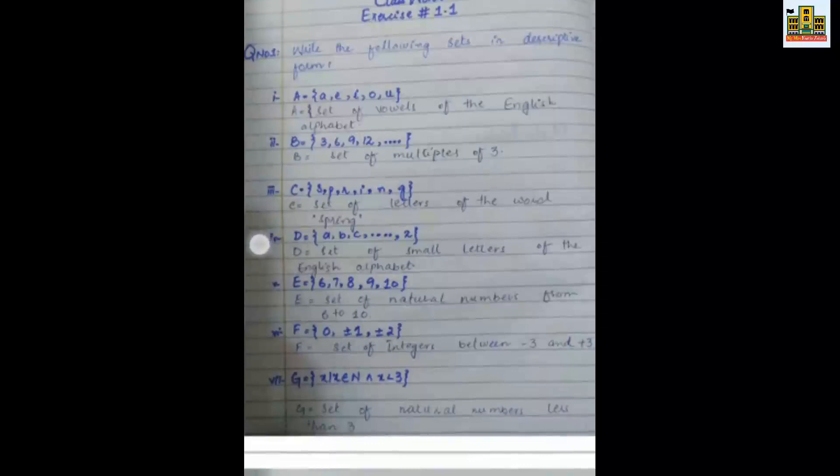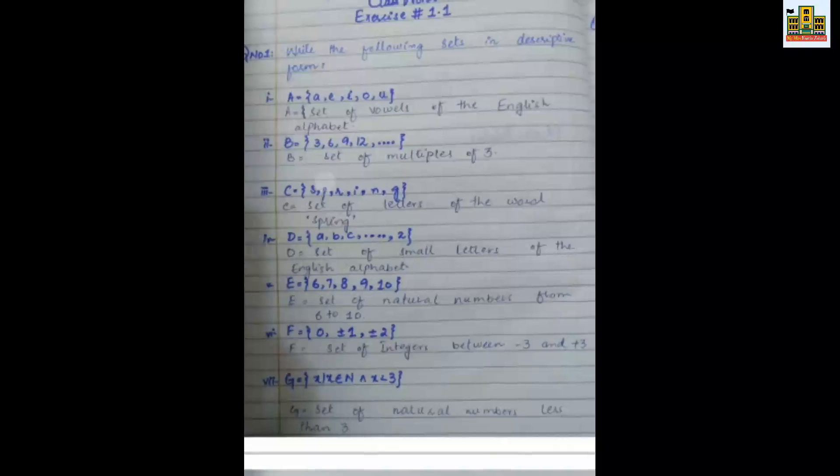This one is a set of letters of word spring. In the third question, what we have to say that in third question what we have to say: C is equal to s, p, r, i, n, g letters. You have to give it the set of letters of word spring. Okay, in D you have to say this is a, b, c up to z.